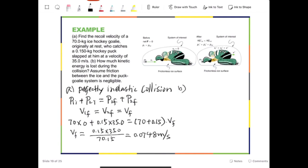Therefore, we are going to solve for the change in kinetic energy. Let's list the initial kinetic energy, KE1i and KE2i. So KE1i is 0.5 times 70 times 0 squared, and KE2i is going to be 0.5 times 0.15 times 35 squared. Now, minus final.